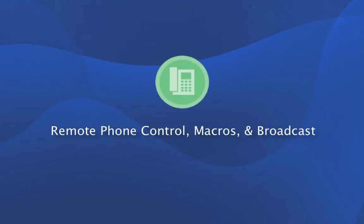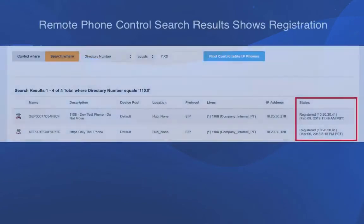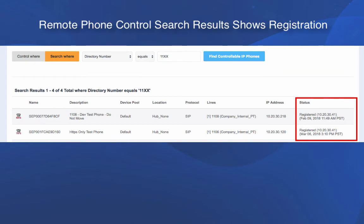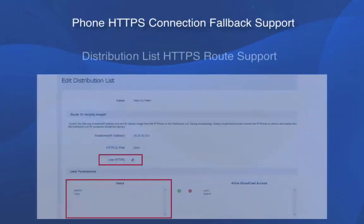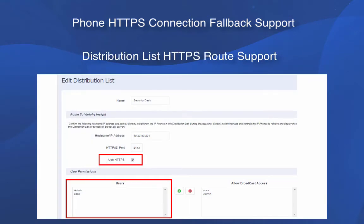Remote phone control, macros, and broadcast. The remote phone control search results now show a registration timestamp, and whether they are registered, partially registered, or unregistered. We also added phone HTTPS connection fallback support and distribution list HTTPS route support.